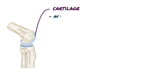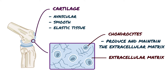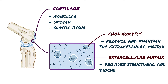Cartilage is an avascular, smooth and elastic tissue that consists of chondrocytes and an extensive extracellular matrix. Chondrocytes are specialized cells that produce and maintain the extracellular matrix. The extracellular matrix is the extracellular part of multicellular structure that typically provides structural and biochemical support to the surrounding cells.